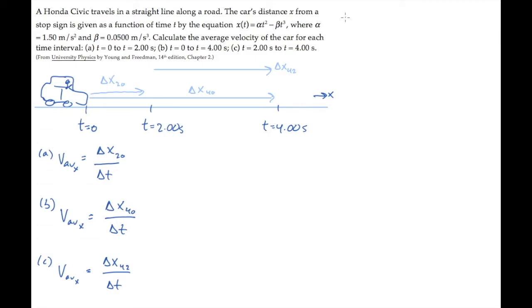Before we can calculate these average velocities, we need to know the positions at each of those times. We'll find those using the equation they give us. x, the position as a function of time, equals alpha t squared minus beta t cubed.